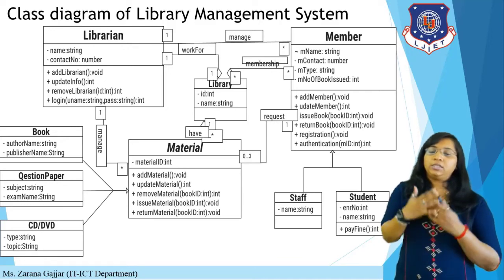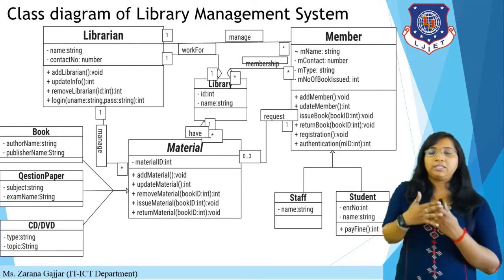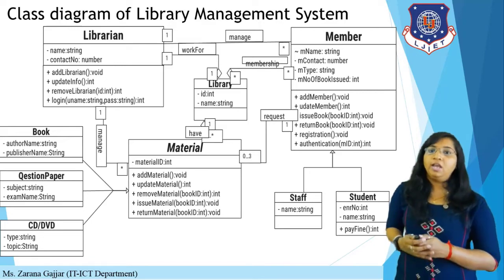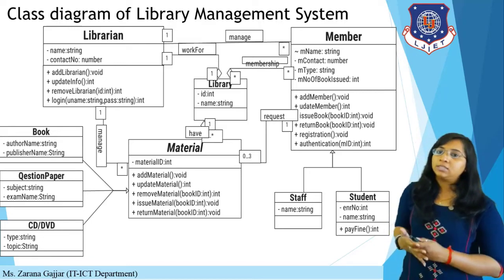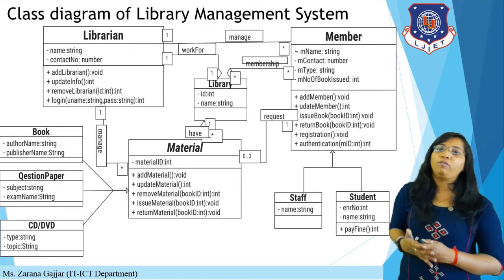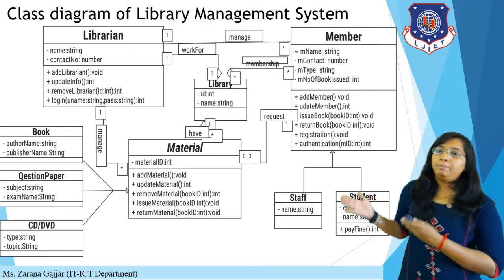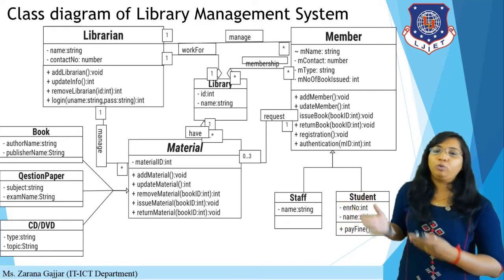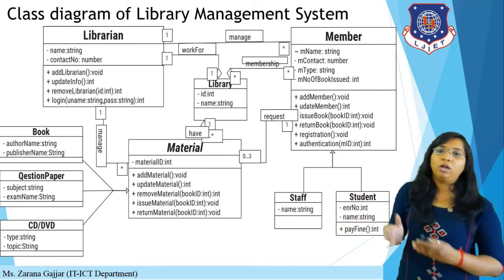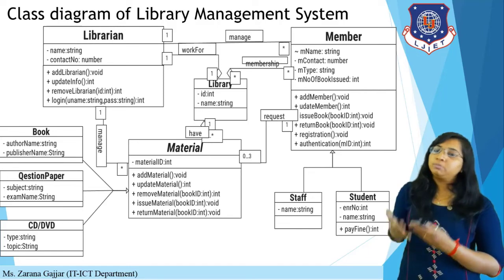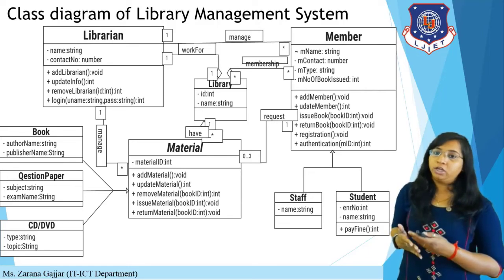Material is specialized into book, question paper, CD/DVD, and magazine classes. Material is an abstract class written in italic format. Member is generalized into staff and student — if you are staff you can issue multiple books, but if you are a student you have a limited number. All classes have different categories and particular operations. Multiplicity is also defined — one-to-many, many-to-one, one-to-one — along with generalization, specialization, and aggregation.